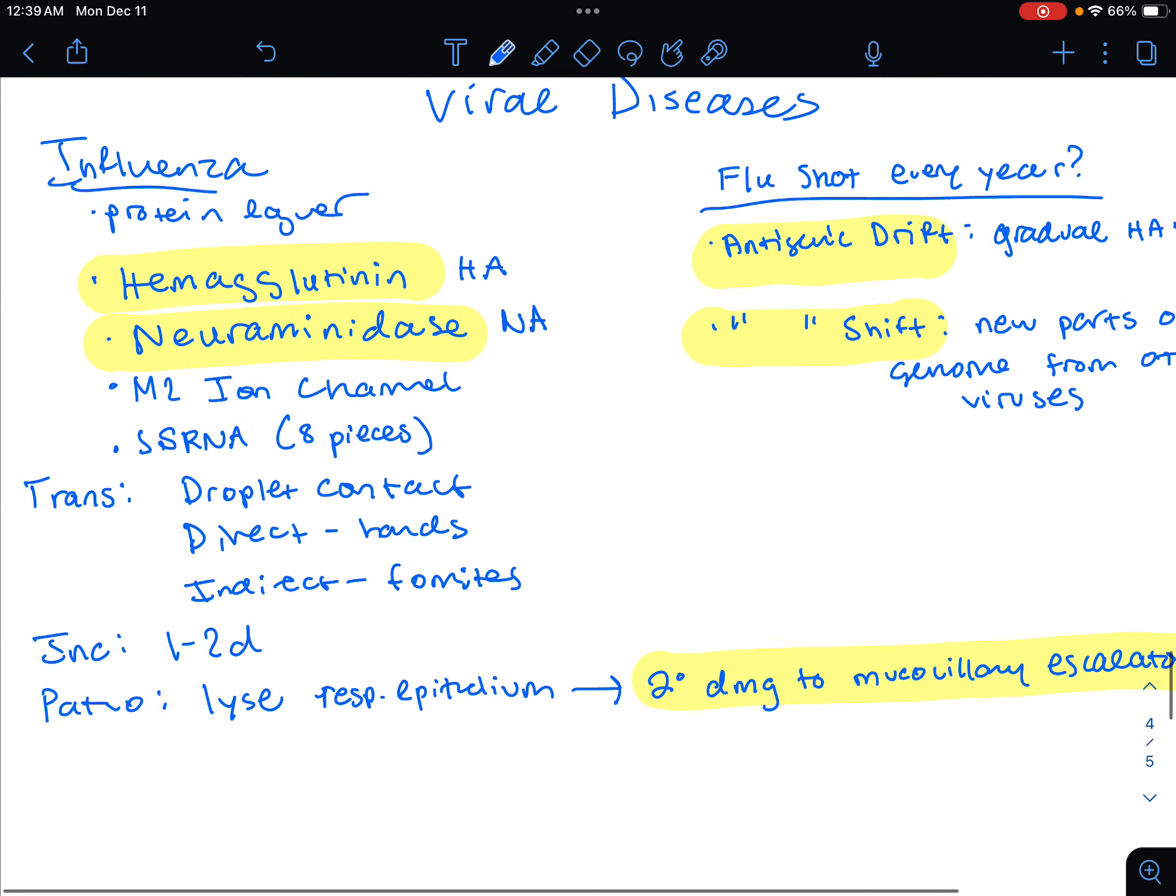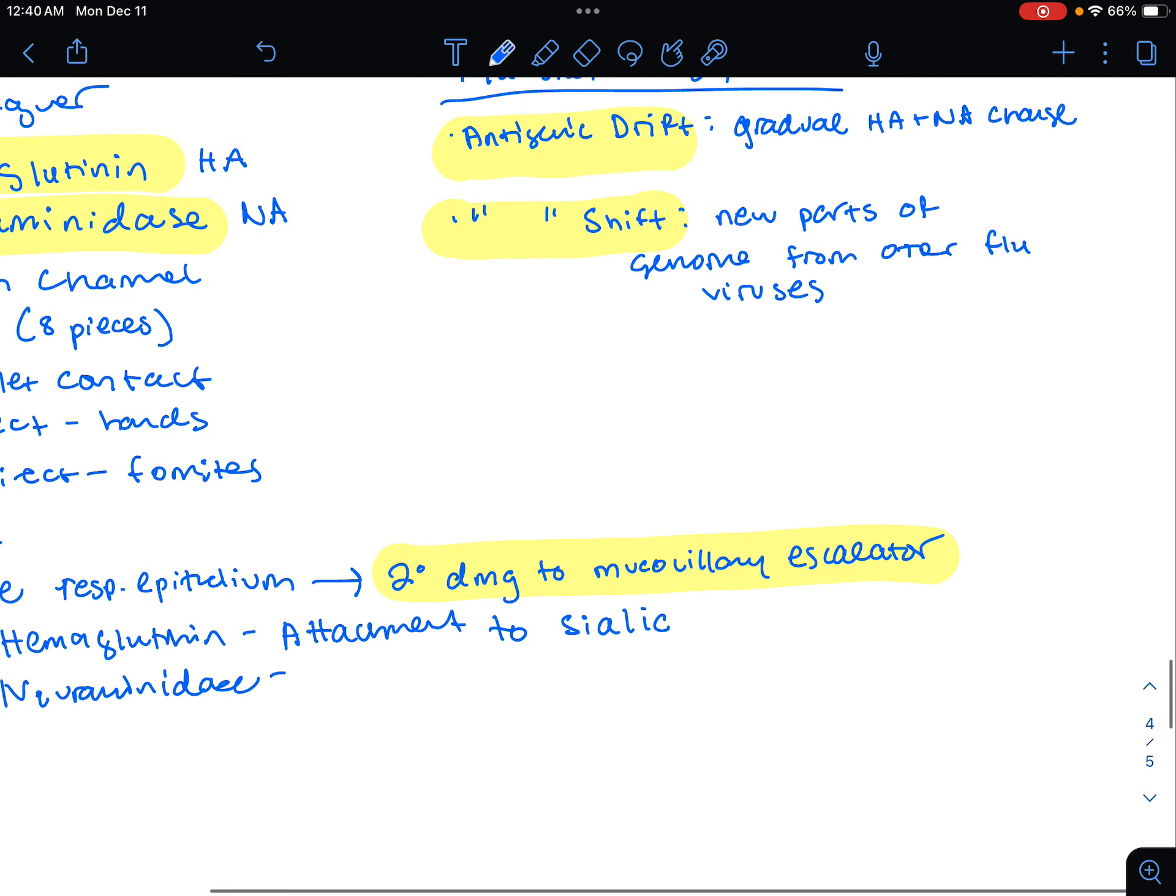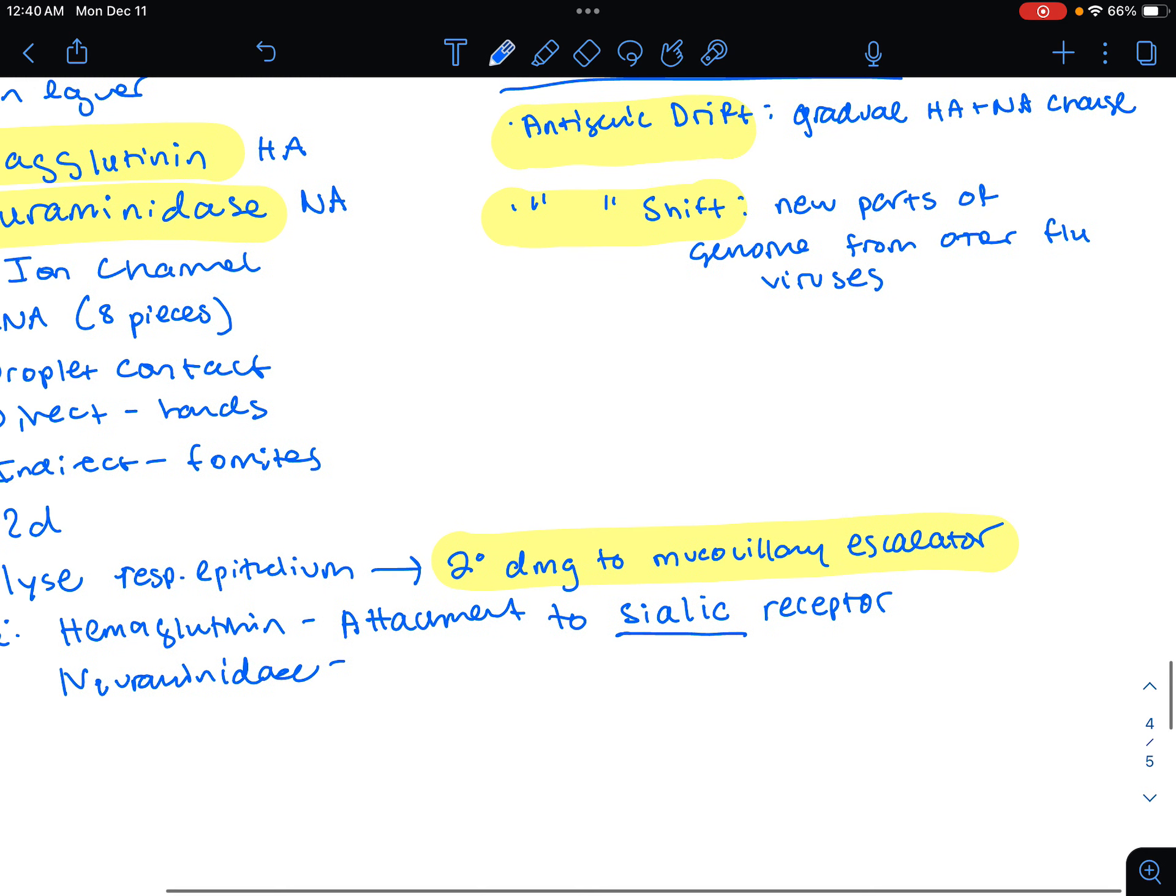The virulence factors are actually going to be our hemagglutinin and our neuraminidase. Hemagglutinin is for attachment to the sialic acid receptor. The neuraminidase is for release, and this is going to detach or remove itself from the sialic acid.